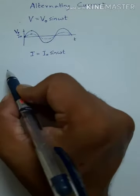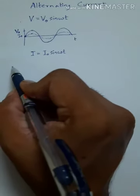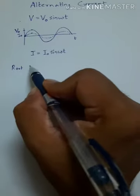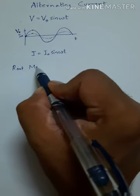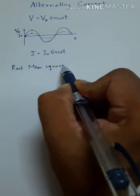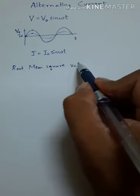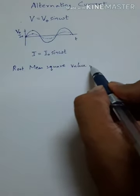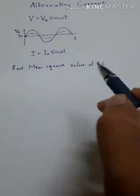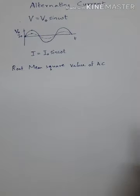Now we are going to introduce in this chapter a term: the root mean square value of alternating current. Let us see what we mean by the root mean square value.